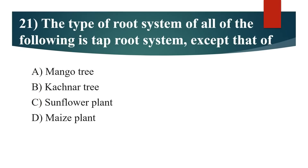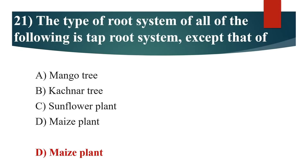21st question: The type of root system of all of the following is taproot system, except that of? Option A: Mango tree. Option B: Kitchener tree. Option C: Sunflower plant. Option D: Maize plant. Answer is Option D: Maize plant.